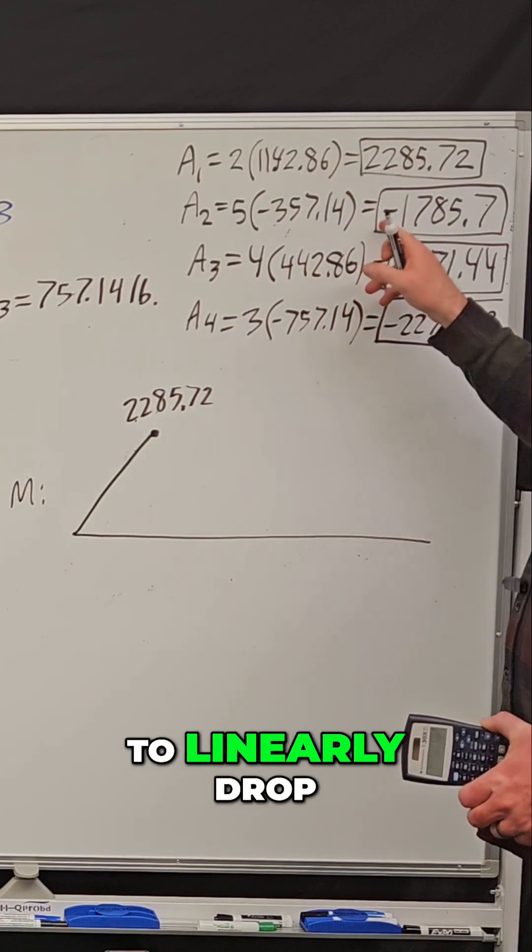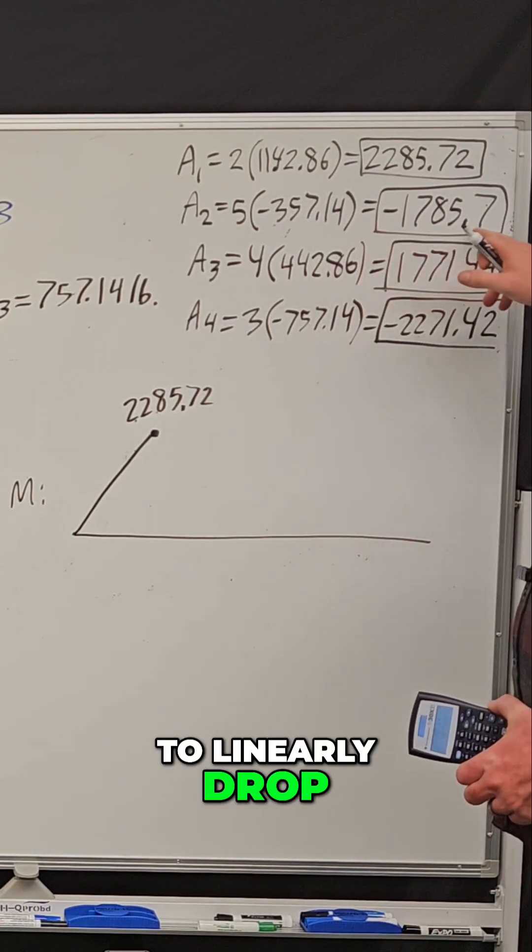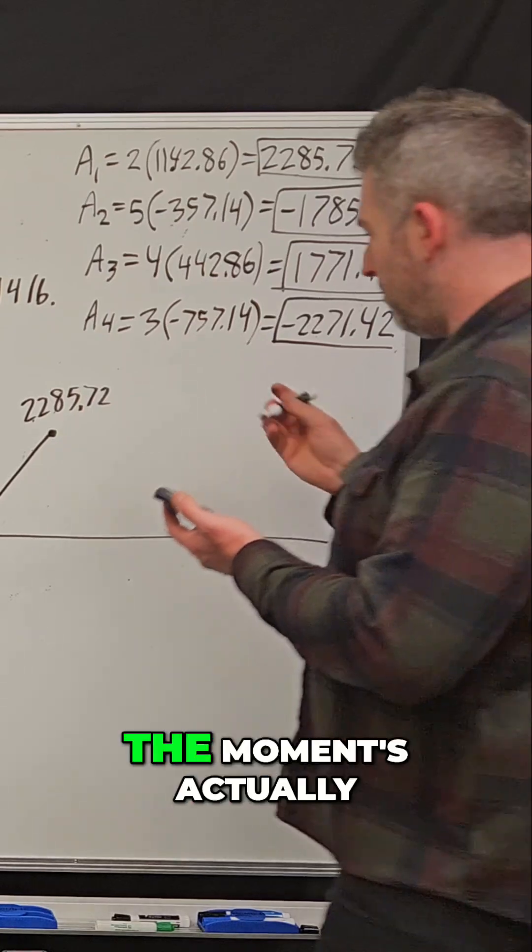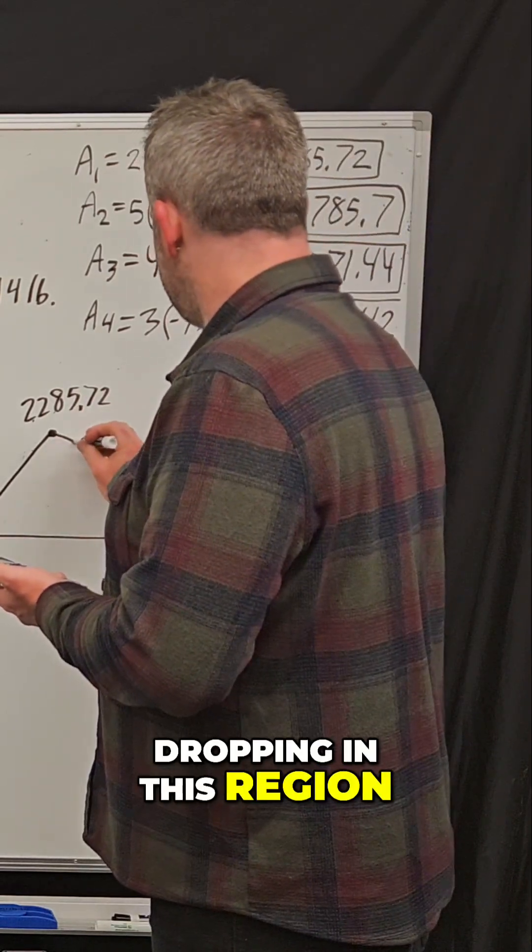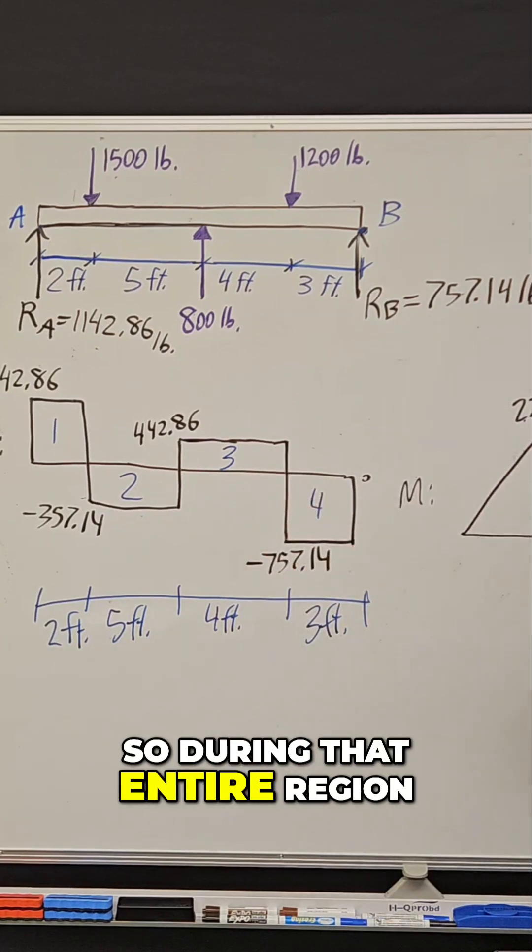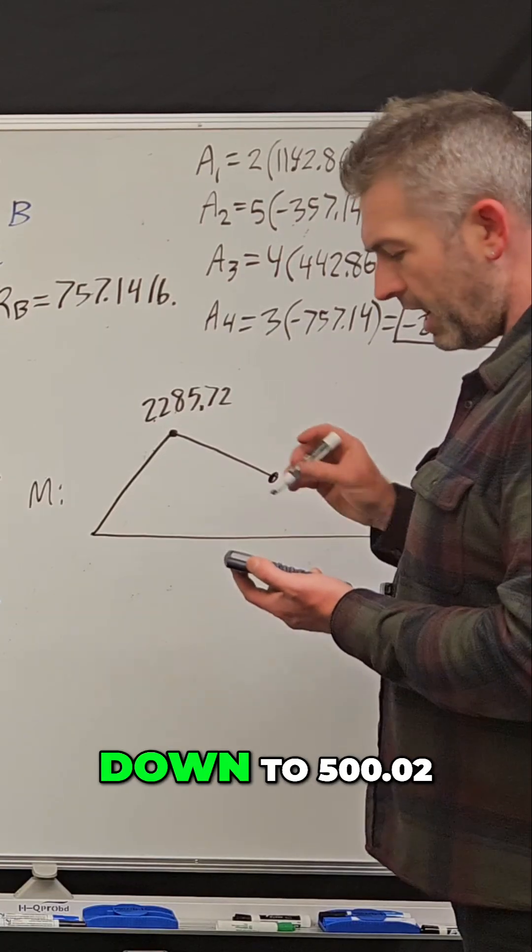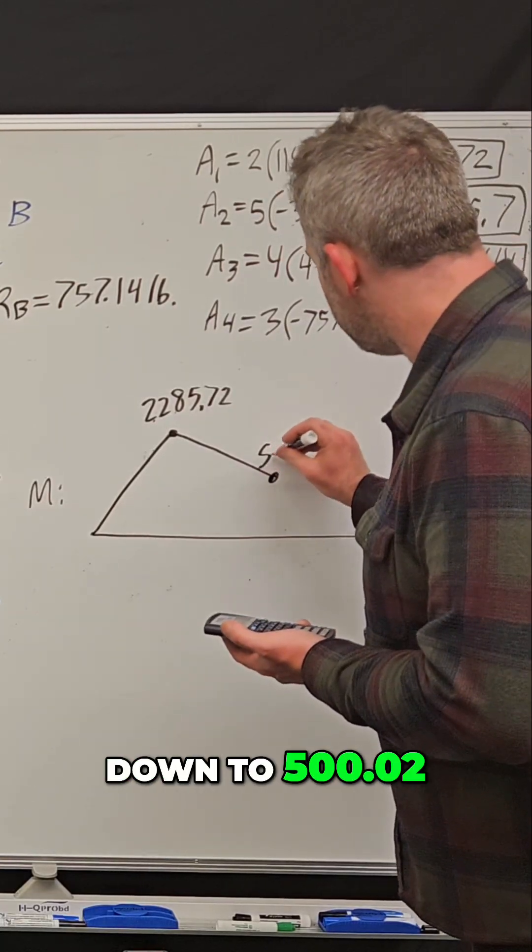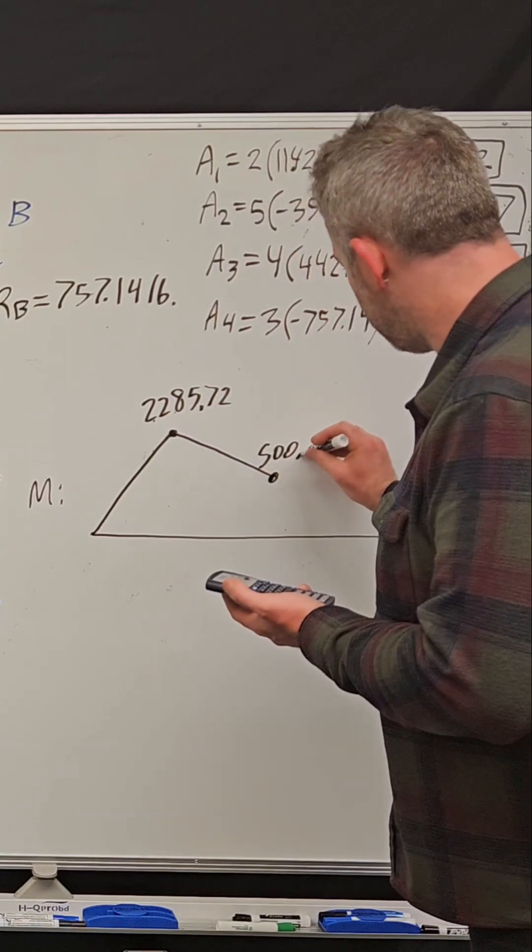So now the moment is going to linearly drop by this amount. The moment's actually dropping in this region, and this is that region two here. So during that entire region, it's going to go down to 500.02.